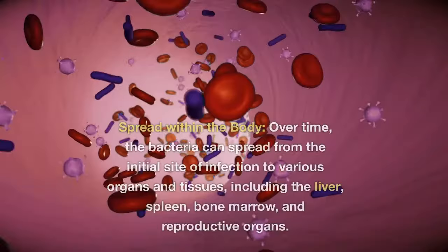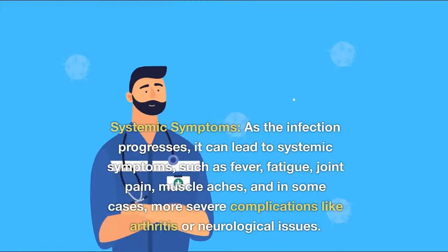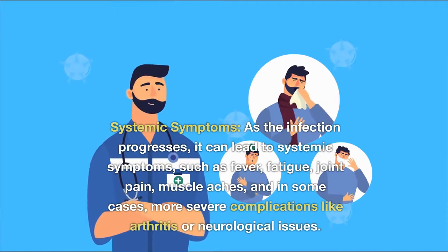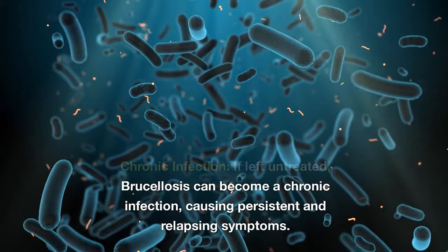Over time, the bacteria can spread from the initial site of infection to various organs and tissues, including the liver, spleen, bone marrow, and reproductive organs. As the infection progresses, it can lead to systemic symptoms such as fever, fatigue, joint pain, muscle aches, and in some cases more severe complications like arthritis or neurological issues. If left untreated, brucellosis can become a chronic infection, causing persistent and relapsing symptoms.